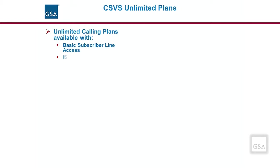CSVS options under EIS include unlimited and usage-based options. Unlimited CSVS calling is only available to agencies on the following access line types: basic subscriber line, ISDN primary rate interface (PRI), or ISDN basic rate interface (BRI) lines.